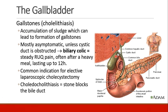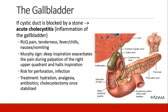Choledocholithiasis is when a stone blocks the bile duct. If the cystic duct is blocked by a stone, a patient can develop acute cholecystitis, inflammation and infection in the gallbladder. Right upper quadrant pain, tenderness, fever, chills, nausea, and vomiting are common signs. The Murphy sign is specific: if you palpate the right upper quadrant and ask the patient to take a deep breath, the pain will cause them to stop inspiring mid-breath. These patients are at risk for perforation and infection, and should be treated with hydration, analgesia, antibiotics, and then cholecystectomy once stabilized.